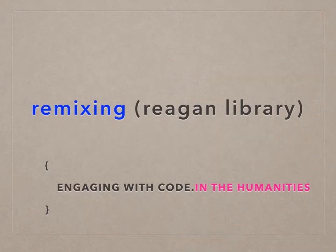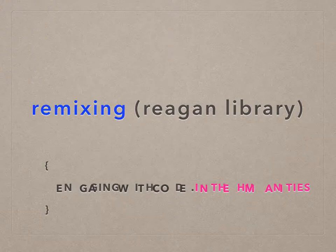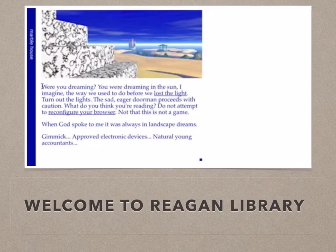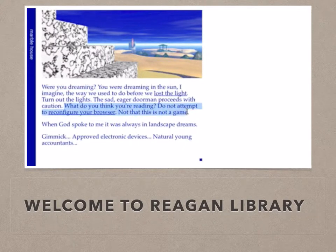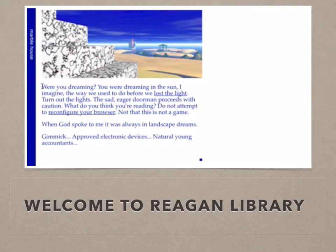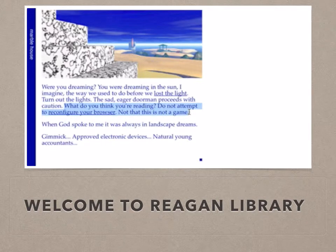When we first encountered Stuart Moulthrop's Reagan Library, we were baffled. The first page, headlined by a mist-like image, read: 'Were you dreaming? What do you think you're reading? Do not attempt to reconfigure your browser.' The whole thing seemed inscrutable. There was no navigation, only underlined words signaling hyperlinks, but to where?